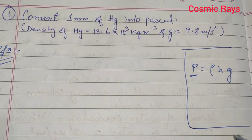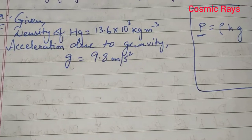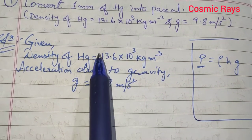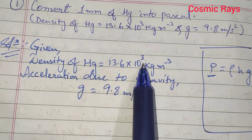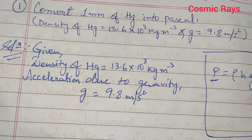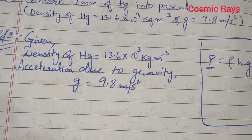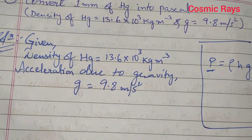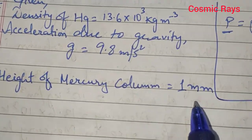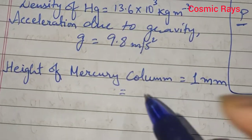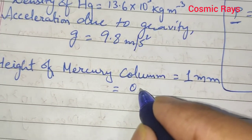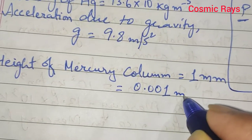We start writing the given things. The density of mercury is given as 13.6 × 10³ kg per meter cube, and acceleration due to gravity is 9.8 meter per second square. The height of the mercury column is 1 millimeter, which we convert into meters by dividing by 1000, giving 0.001 meter.